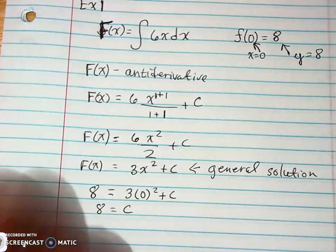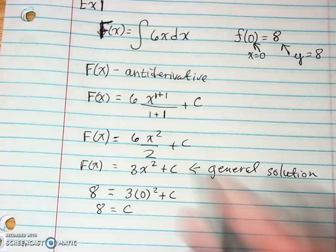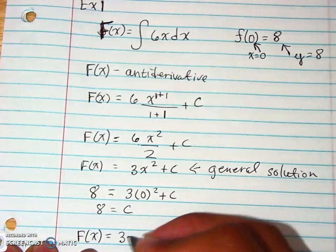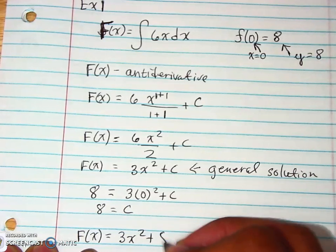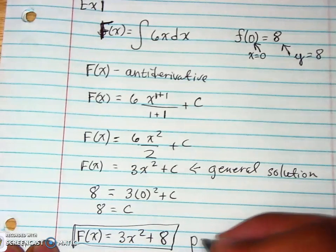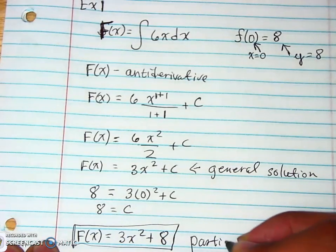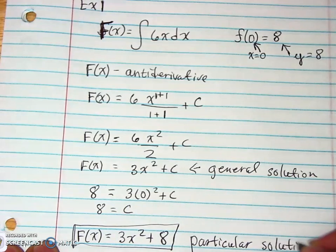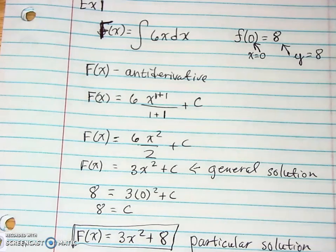So our particular solution would be f of x equals 3x squared plus 8. And that's our particular solution. And that's all we're going to do for each one of these. The exact same process over and over and over again. Then we might add some extra stuff in later on. But it's going to be okay.